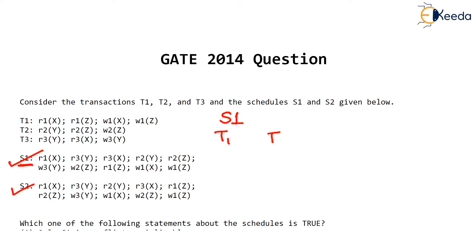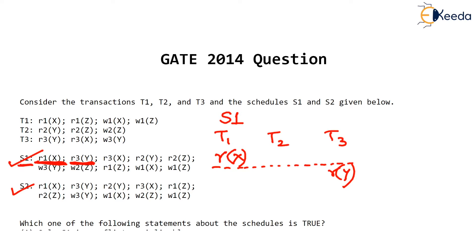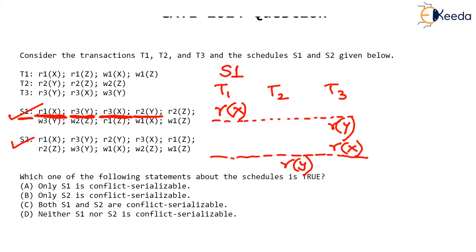In schedule S1 there are three transactions T1, T2, T3. The first operation is R1X — since R1 means conducted by T1, we write Rx under T1. The next operation is R3Y, meaning T3 is conducting read Y. Then R3X, so T3 is reading X. After that comes R2Y, meaning T3 is preempted and T2 is conducting read Y. This shows how the concurrent schedule is read and represented in tabular form.